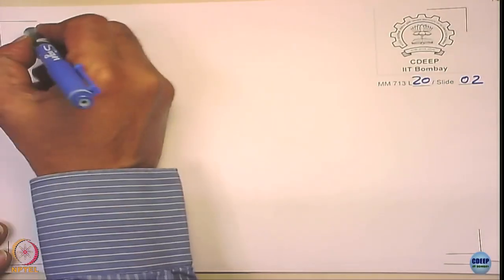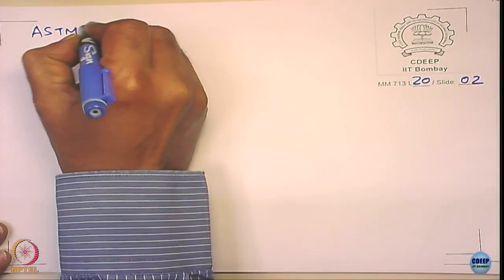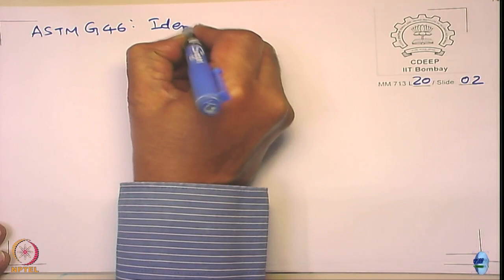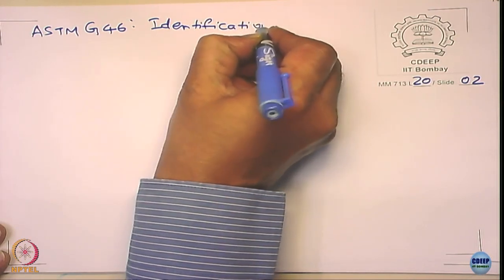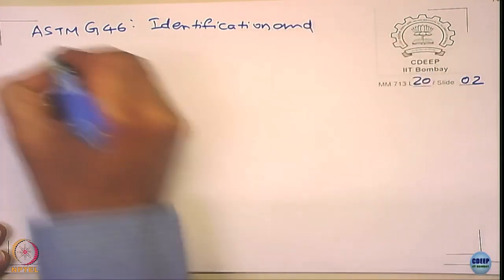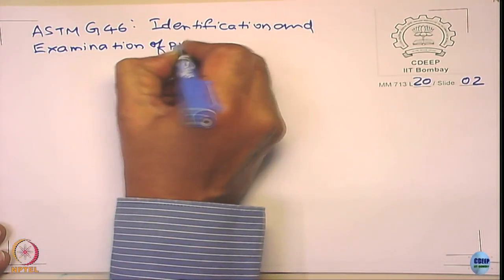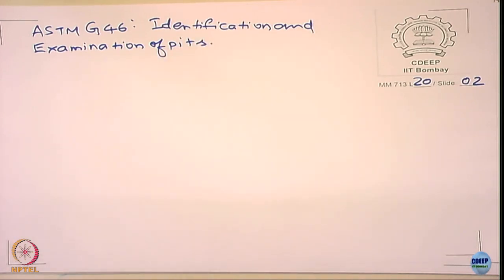It is necessary to understand that a pit is not only one shape — you can have complex shapes and different pit morphologies. If you want to know more details, you can look at the ASTM G46 standard, which talks about identification and examination of pits and discusses various pit morphologies.